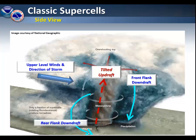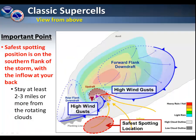Even if a thunderstorm is rotating, only a fraction of supercells will produce tornadoes. The important point to understand with classic supercells is that you need to stay on the southern flank of the storm with the inflow at your back. You should stay at least two or three miles or more from the rotating clouds.